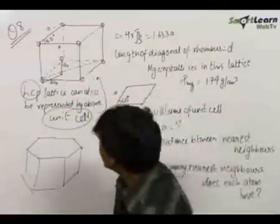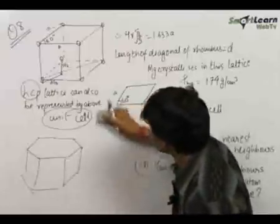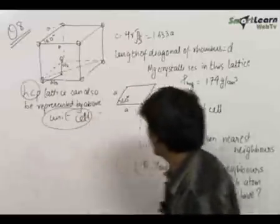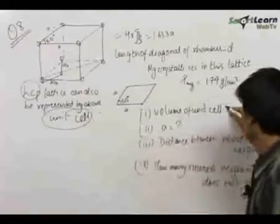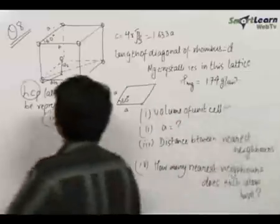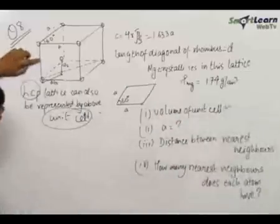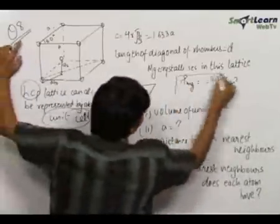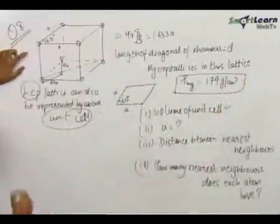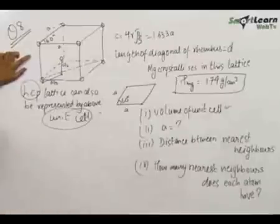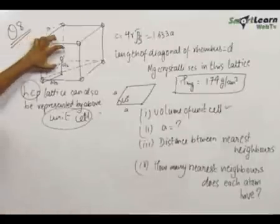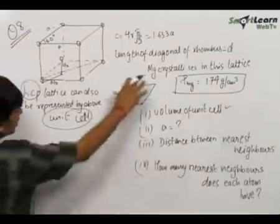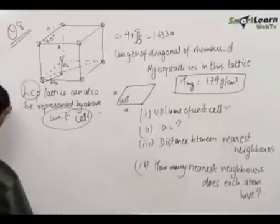Let us analyze this unit cell to find out the volume first. To find the volume of the unit cell, we have already been given the density. Therefore, if we can find out the mass of the atoms present in this unit cell, we can find out the volume directly.